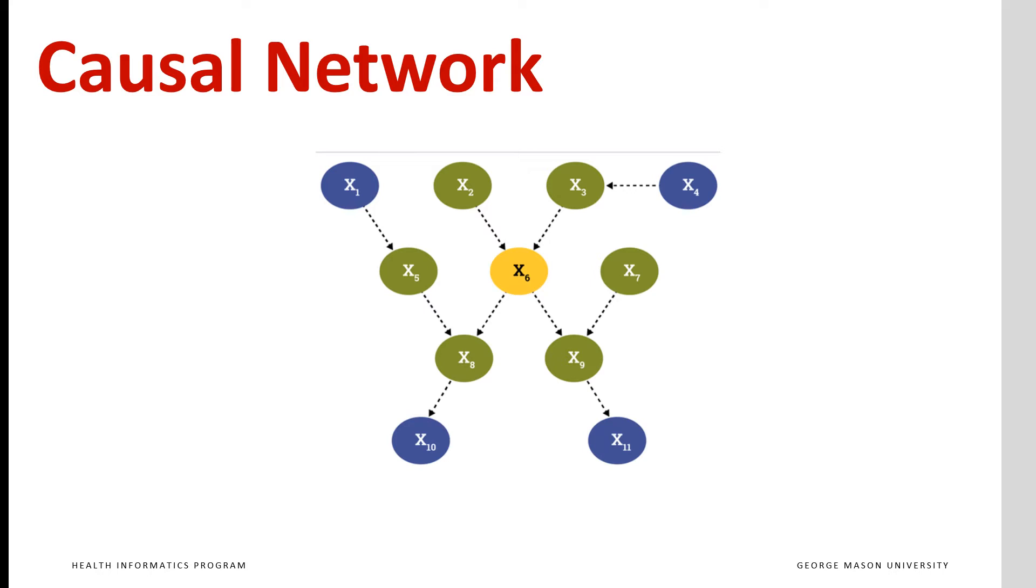For example, x6 is the common cause of x8 and x9. So x8 and x9 are not causally related to each other, but they are correlated. In fact, every node in a causal network is correlated with each other.